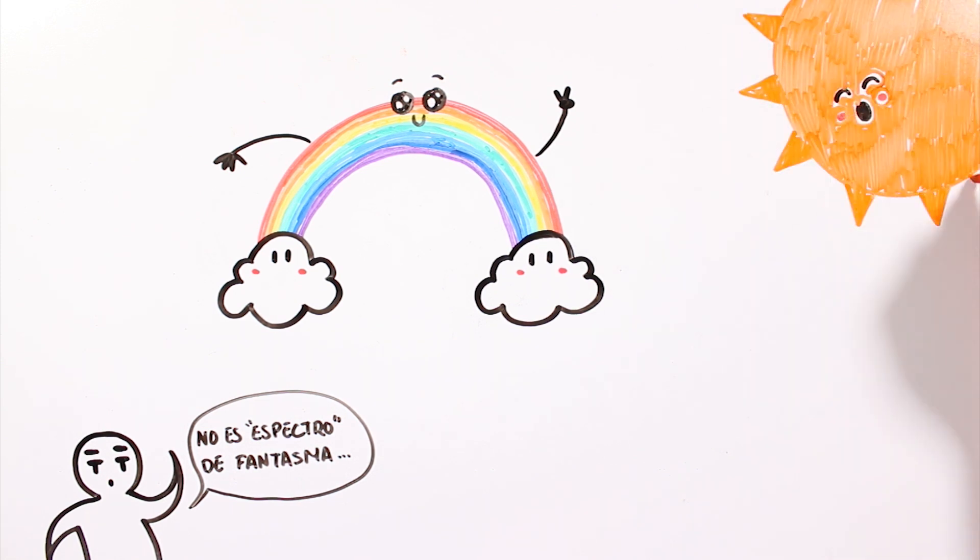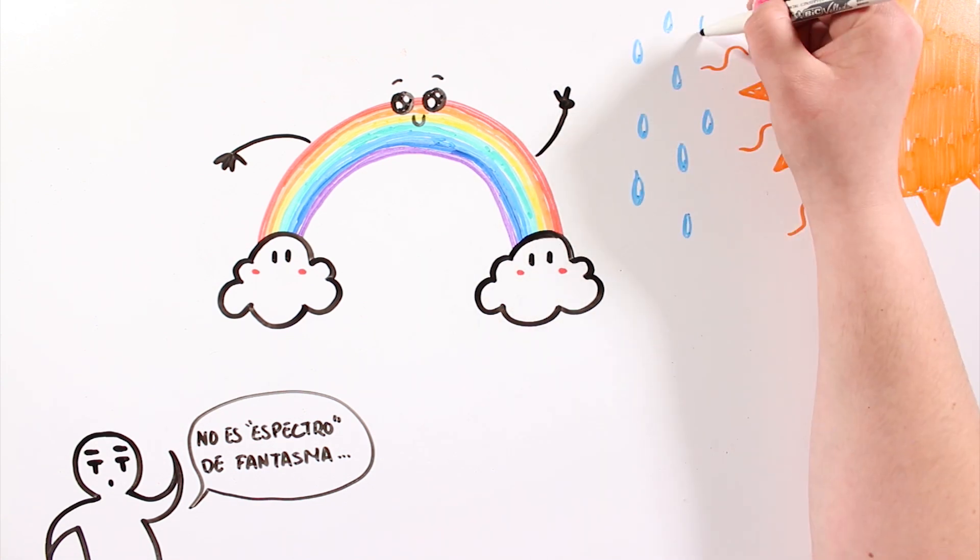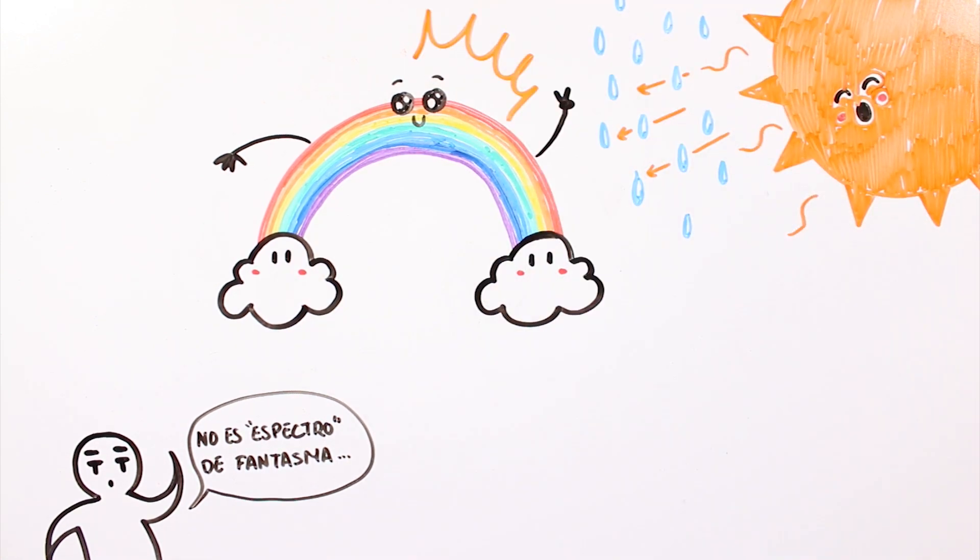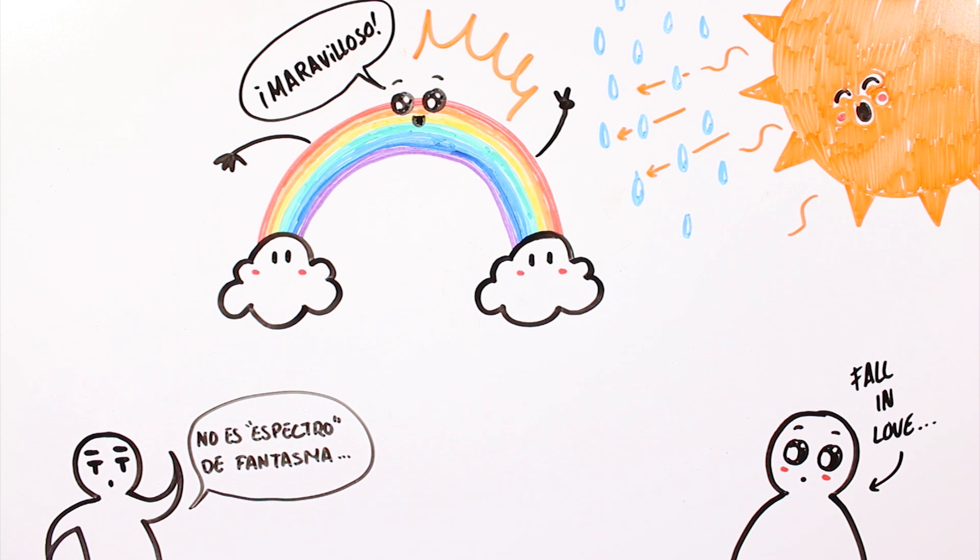When the rays of sunlight go through water particles, for example, raindrops in the sky, the white light is scattered in different arches of color: red, orange, yellow, green, blue, indigo, and violet.